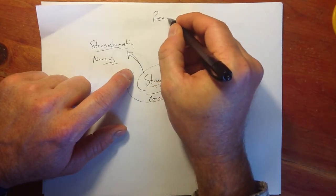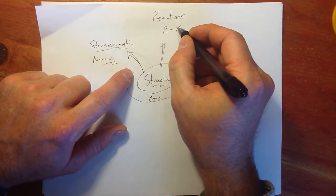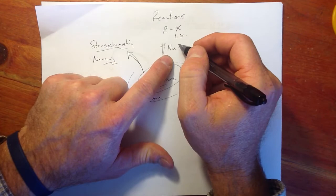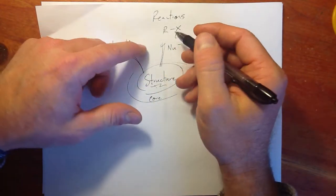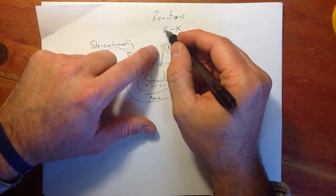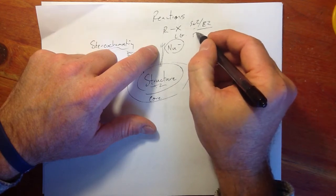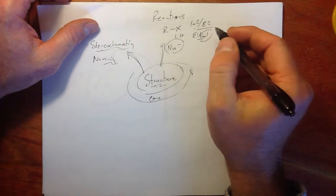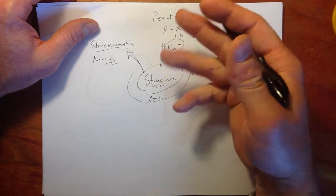One of the first reactions we started discussing was the reaction of alkyl halides, where X is some leaving group. We talked about how nucleophiles can act as a base or as a nucleophile towards an alkyl halide — they can attack a proton at the beta position, acting as a base, or come in and attack a carbon. So you had reactions like SN2 and E2 that competed with each other, and E1 and SN1 that could occur together.